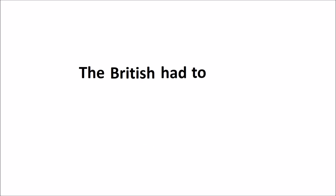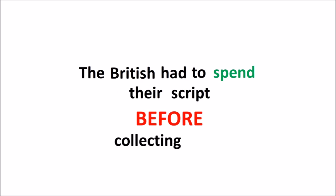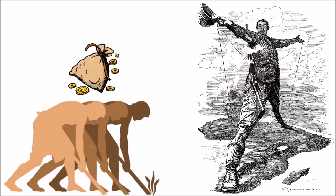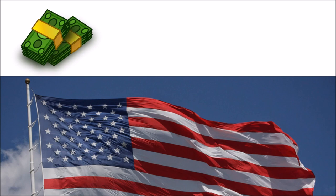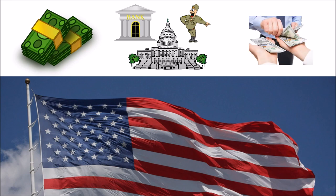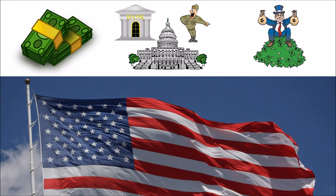Lesson one: The British had to spend their script before collecting taxes — where else could it come from? It was obvious to all that the British paid their workers first and then collected taxes. The same is true in the US today. All the dollars that can be used to pay federal taxes come from lending and spending from the federal government and its agents. Close examination of government accounts confirms the US government spends first and then is paid taxes, or borrows the dollars it already spent.